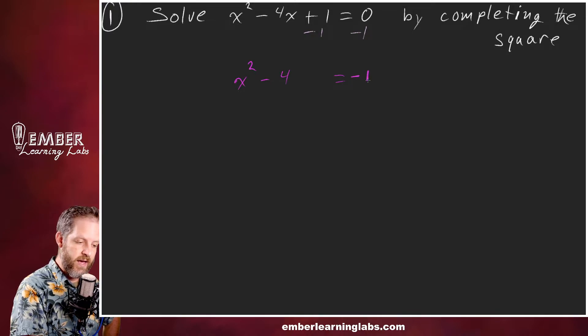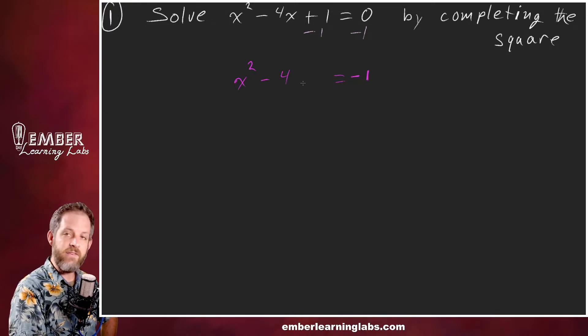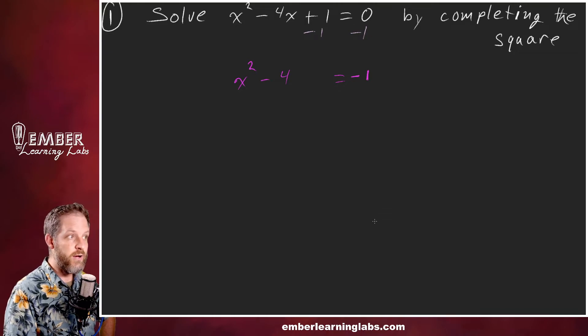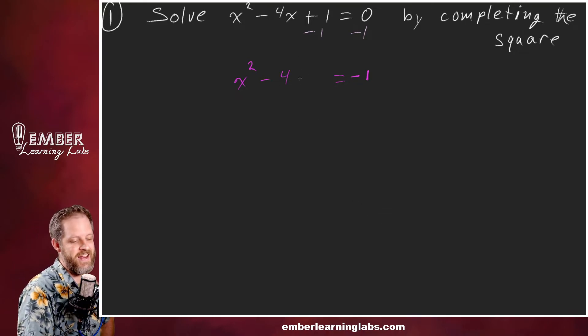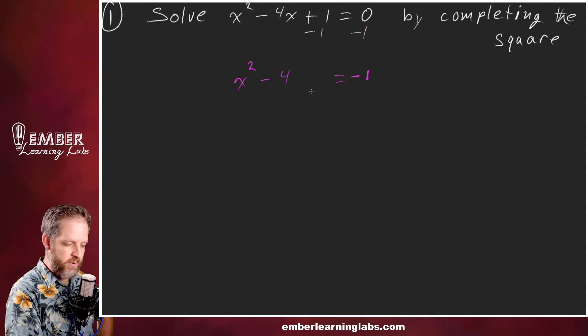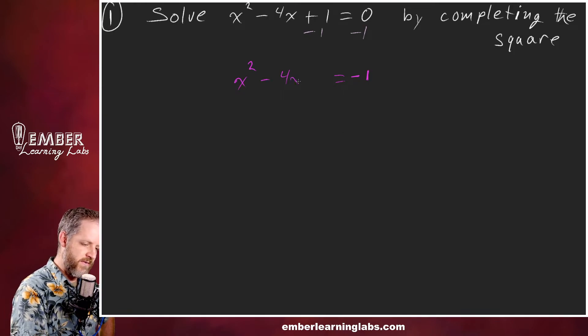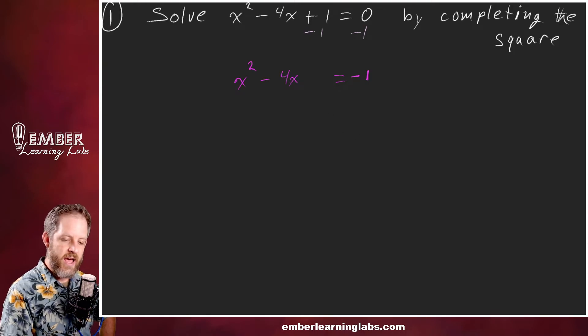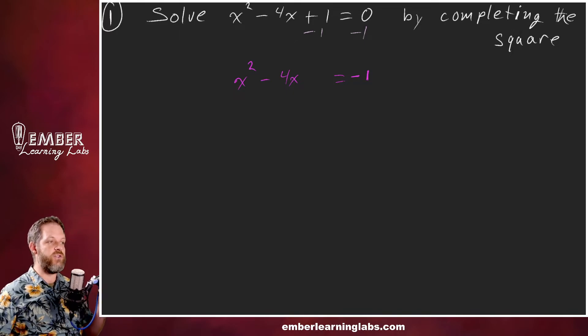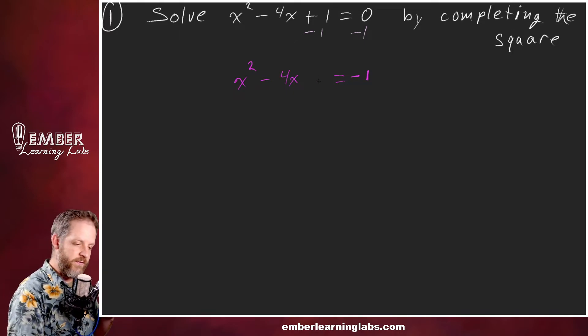Notice I left a space here. It's because we are going to complete the square right here. I did leave off an x that should be there. In order to complete the square, we need to figure out what goes here.